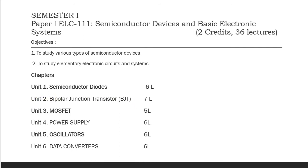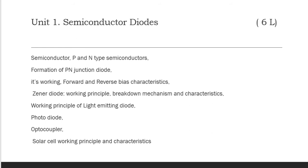Today we will discuss Unit 1: Semiconductor Diodes. In this unit, we will cover what is meant by a semiconductor, P-type and N-type semiconductors, the formation of the PN junction diode, the working principle of a PN junction diode, forward bias and reverse bias characteristics, the Zener diode working principle, LED, photodiode, optocoupler, and solar cell.